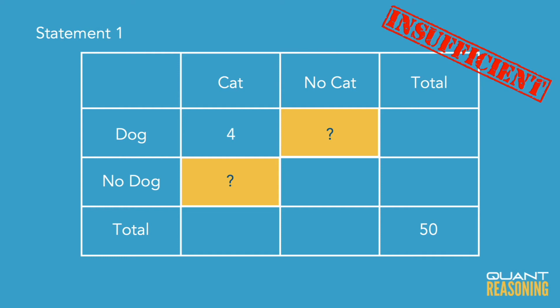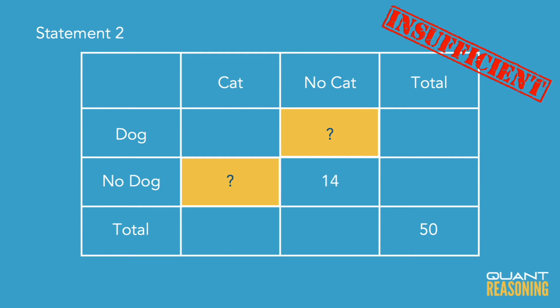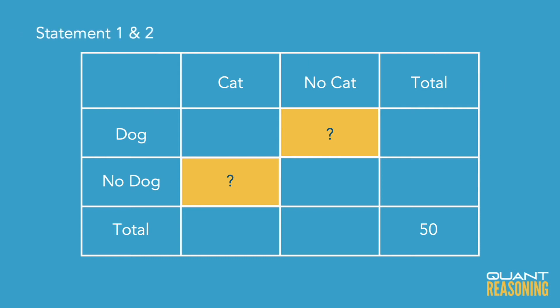Each statement on its own isn't going to be sufficient, because it gives us one cell and we're looking for the sum of two cells — we're missing information about that fourth cell. When we combine the statements, though, we've got 4 in the 'both' cell, 14 in the 'neither nor' cell, and we know the sum of all four cells is 50, so the missing 32 must have come from the two diagonal cells whose sum we were asked about.